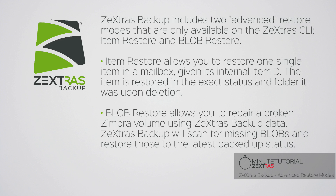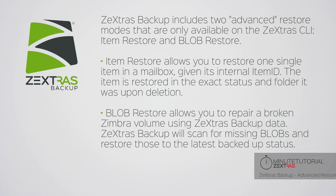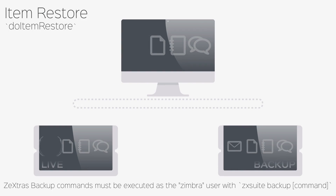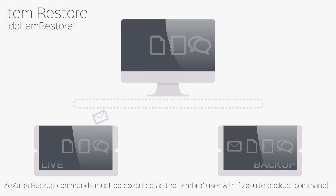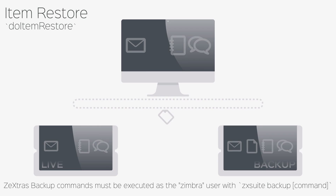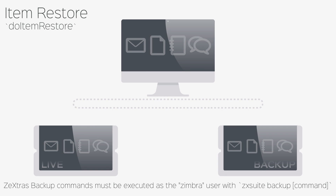Item Restore will restore a single deleted item in a mailbox as it was when it was deleted. You can start this restore through the do item restore command of the Zextris Backup CLI. The item ID can be discovered in Zimbra's mailbox log or with the do item search command.